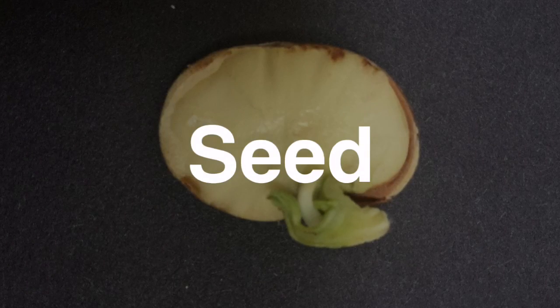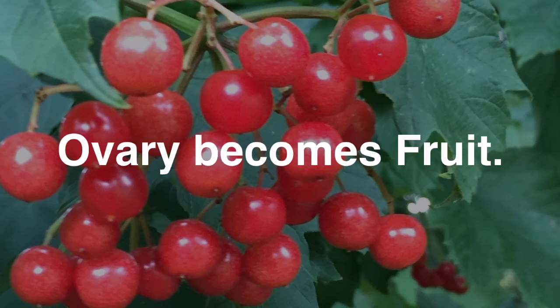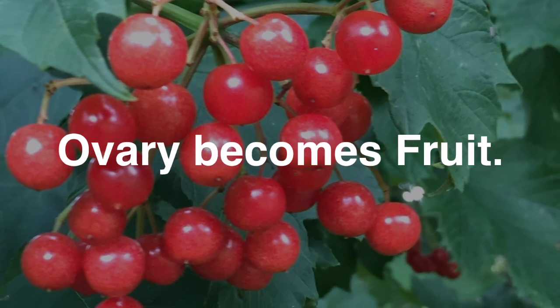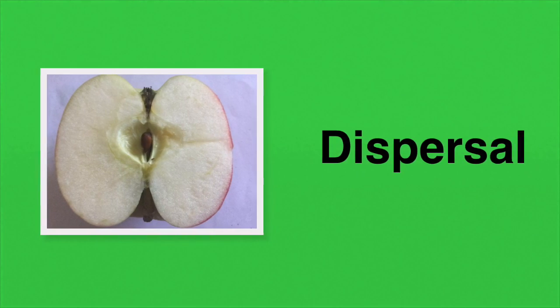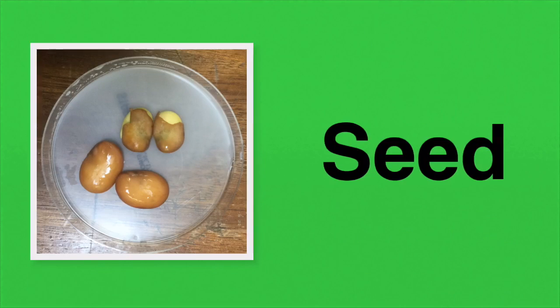The seed has been formed and is found in the ovary of the flower, which eventually becomes the fruit. The fruit is going to aid in the dispersal of that seed.